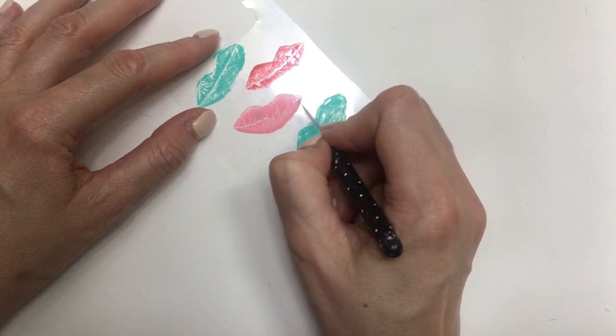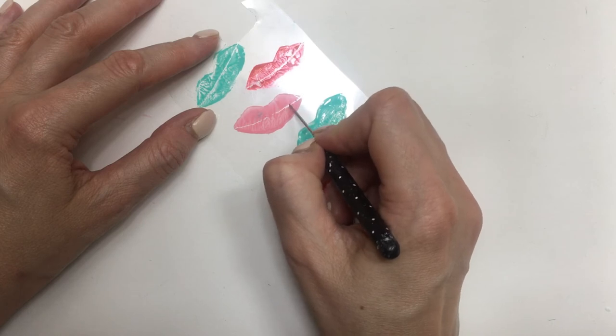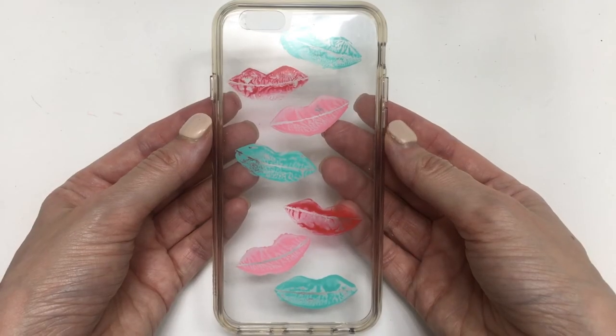Because again, this is an acetate sheet and acrylic paint and if you scratch the paint, it comes right out. And this is what this one looks like by itself.